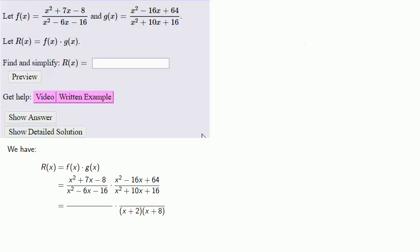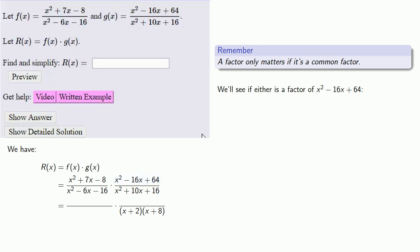Now remember, factorization is the hardest easy problem in mathematics. And so any help we can get is going to be useful. It helps to remember, a factor only matters if it's a common factor. At this point, we have two factors, x plus 2 and x plus 8. And we can see if either of these is a factor of the numerator, x squared minus 16x plus 64.